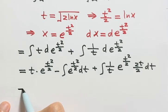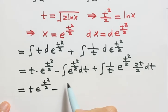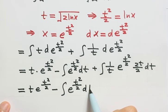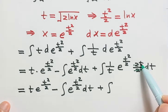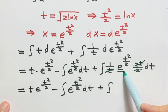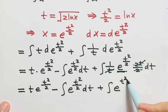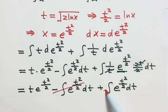Now let's simplify. Keeping the first part and the second part, let's simplify the last integral. The 2 and 2 cancel, and t on top and t on the bottom cancel, so the only term left is e to the power t squared over 2 dt. Now we see that this integral and that integral are exactly the same, just with different signs, so these two cancel.